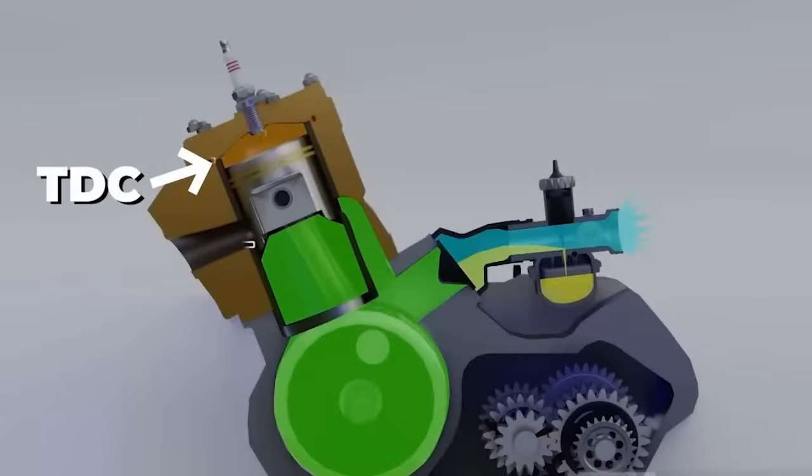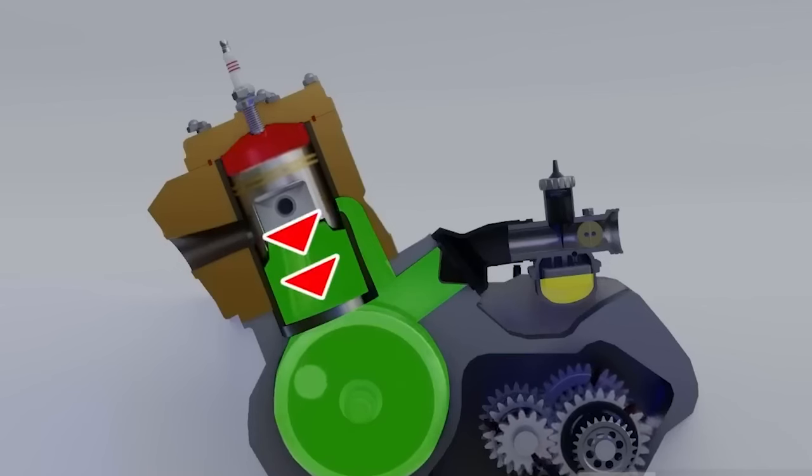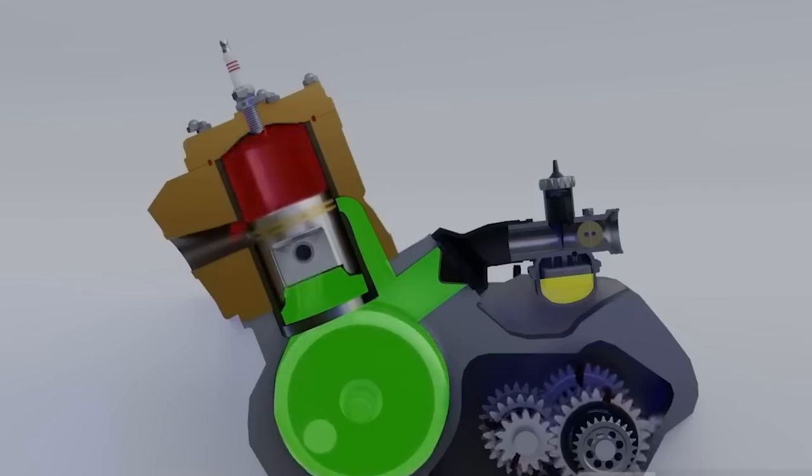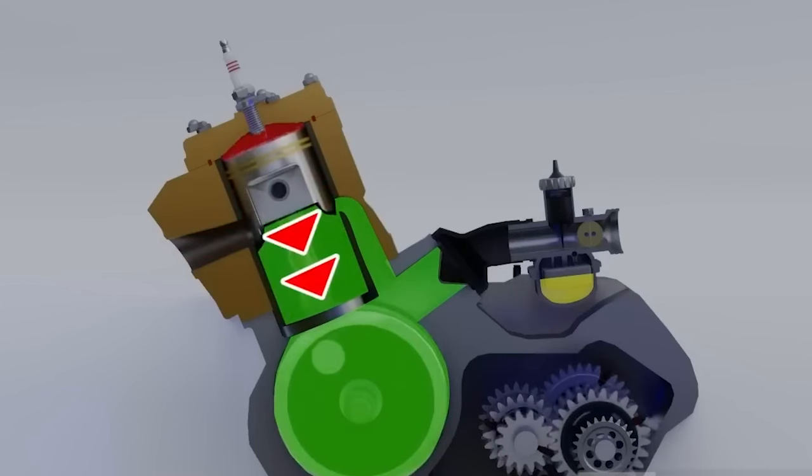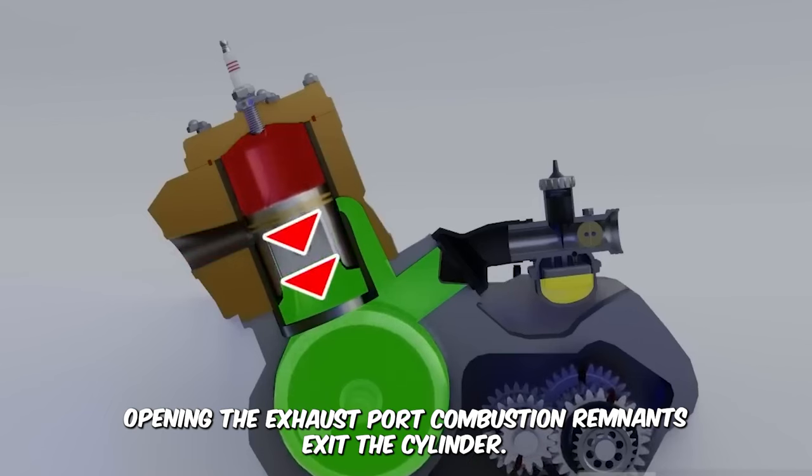At TDC, the second crucial step starts, the power stroke. The fully propagated flame generates power, propelling the piston downward toward the BDC. This phase marks the engine's power generation and is pivotal to its overall functionality. As the piston descends, opening the exhaust port, combustion remnants exit the cylinder.